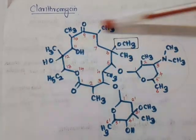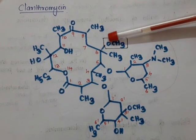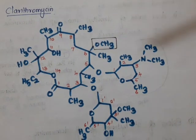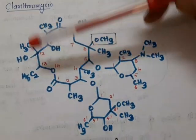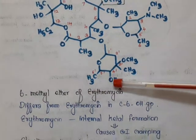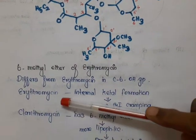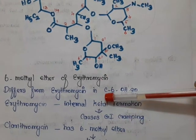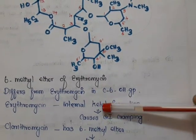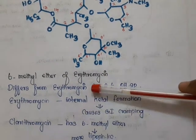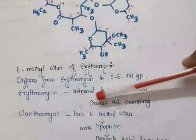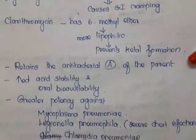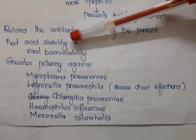Next is clarithromycin. It has a similar structure to erythromycin with only one difference: erythromycin has a hydroxy group at the 6th position, whereas clarithromycin has a methyl ether — the hydrogen is replaced by a methyl group giving a methoxy group. That is why it is called the 6-methyl ether of erythromycin. In erythromycin, the hydroxy group at position 6 forms an internal ketal causing GI cramping; in clarithromycin this is prevented. Because of the 6-methyl ether it is more lipophilic, retains the antibacterial activity of the parent, and has increased acid stability and oral bioavailability.